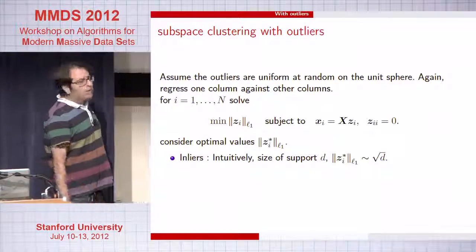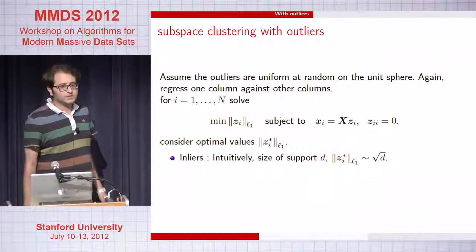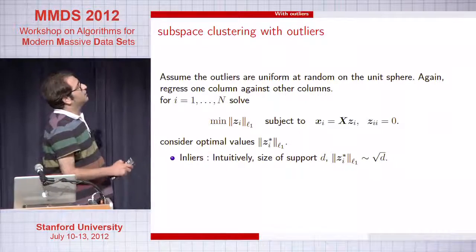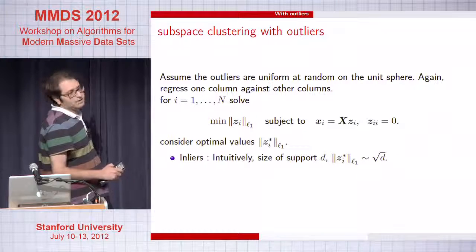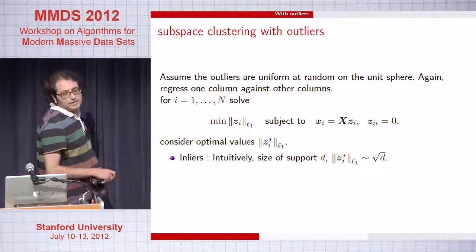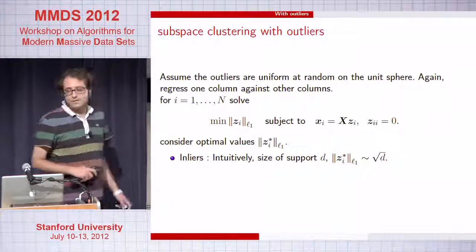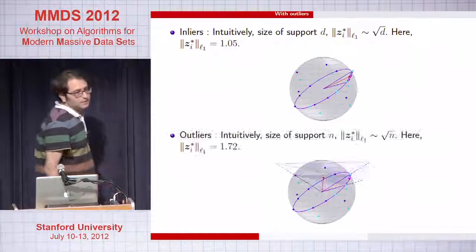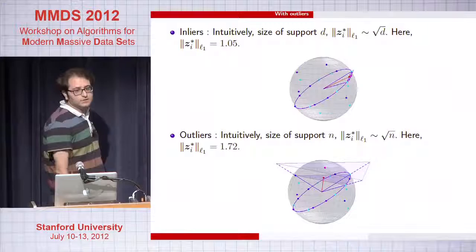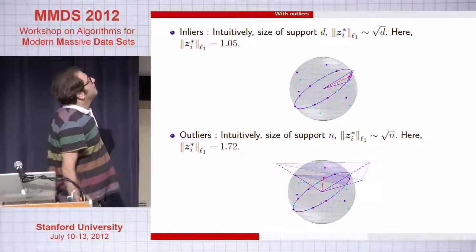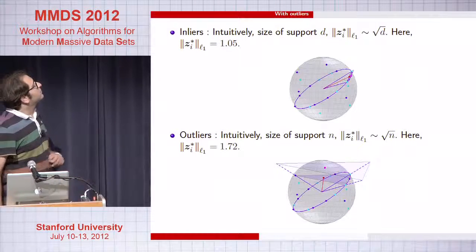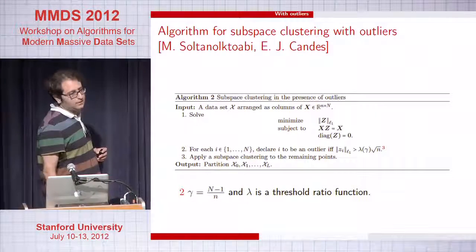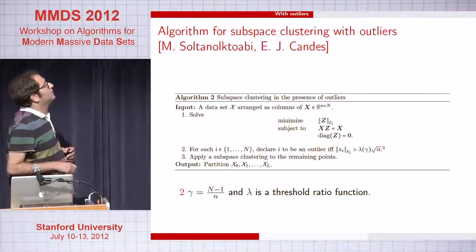Let me move to the outlier case. Our result is also robust to many outliers. The idea is simple: use the same optimization problem and use the optimal value to detect outliers. For inliers, this quantity is small because they live on a lower dimensional subspace; for outliers, it is large. You can exploit this gap. In practice, you put a threshold of roughly square root of n: quantities larger than that give you the outliers. The ratio of the outlier value to the threshold is very high for outliers, and this can be shown provably.